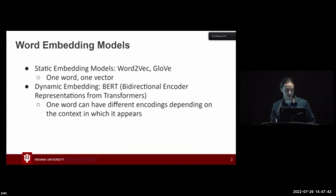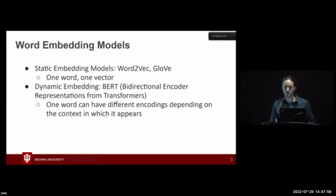I differentiate the models into two different classes. The static embedding models are some of the older models from mostly about five to ten years ago, such as Word2Vec or GloVe. Basically, throughout the pre-training process or after training has occurred, each word or text sample corresponds to one single point in space.